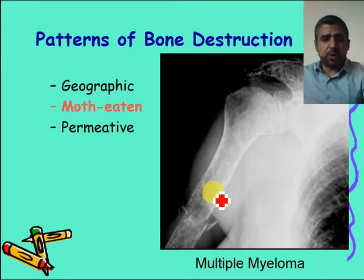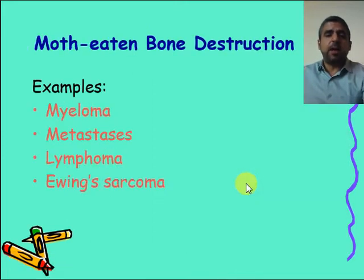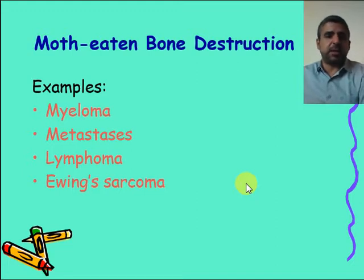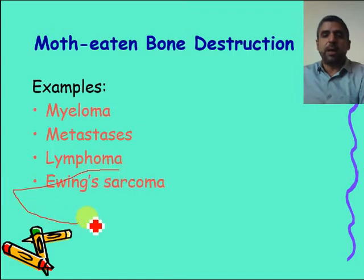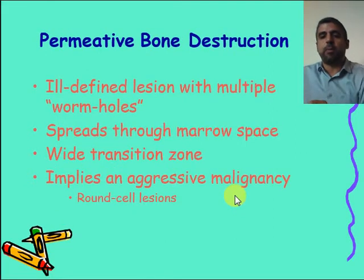The top candidates for moth-eaten bone destruction are multiple myeloma, metastasis, lymphoma, and in young patients — teens and early 20s — always keep in mind Ewing sarcoma. Ewing sarcoma is a common tumor you need to keep in mind in young patients.